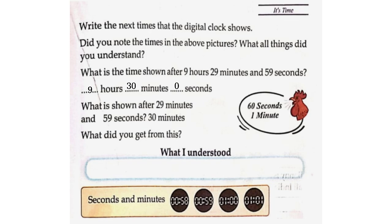60 seconds equals 1 minute. What did you get from this? What I understood: 60 seconds is equal to 1 minute. Seconds and minutes.